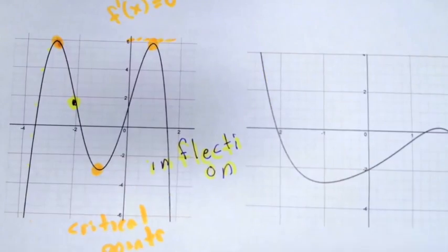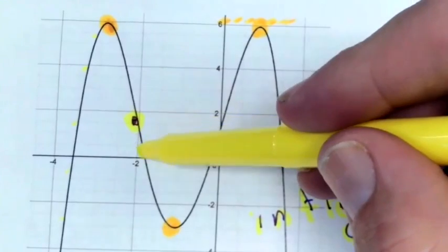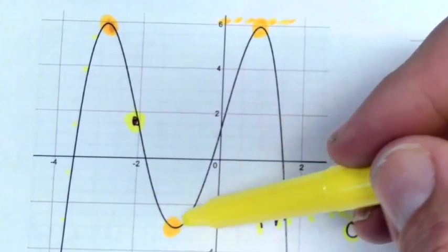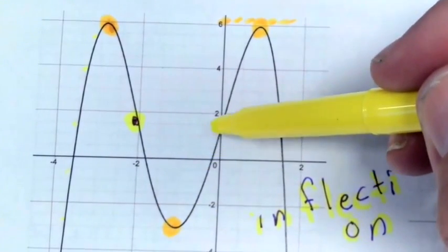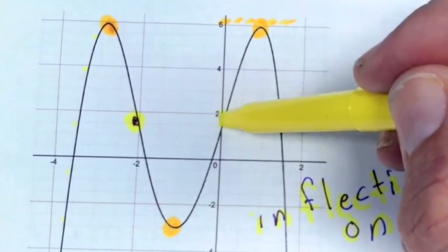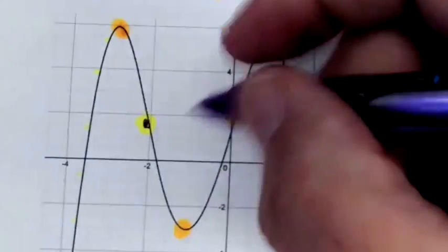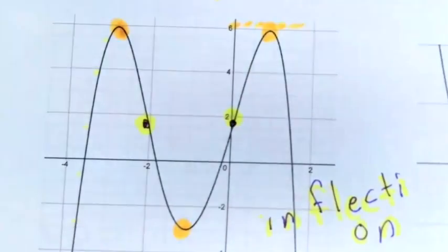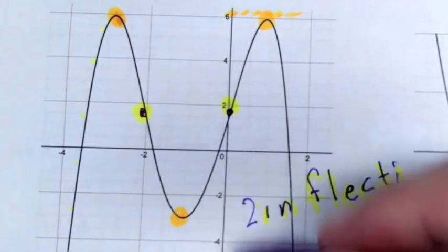Stop me when I get to the next inflection point. So there are two inflection points in this curve and three critical points.